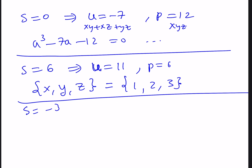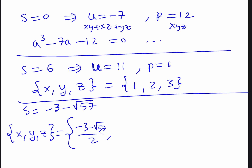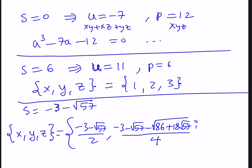For S equals negative 3 minus root 57, we get complex solutions. One of the x, y, z values is a real number: (negative 3 minus root 57) over 2, but the other two are complex conjugates. One of those complex solutions is (negative 3 minus root 57 minus i times root(86 plus 18 times root 57)) all divided by 4, and the other comes with a plus sign on the imaginary part.